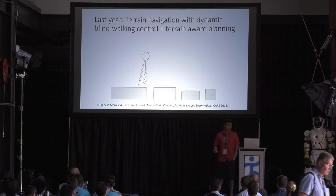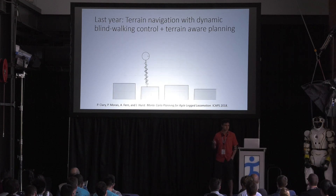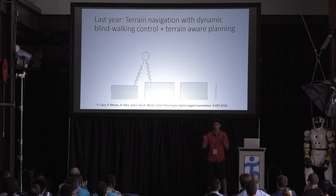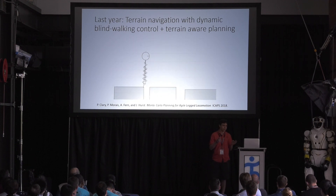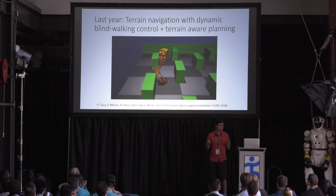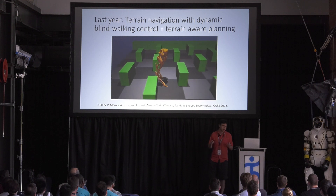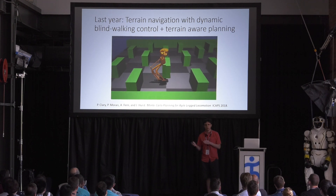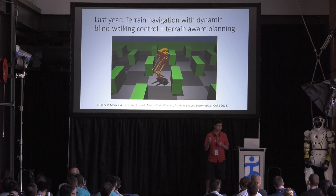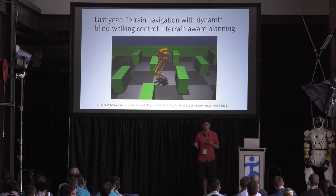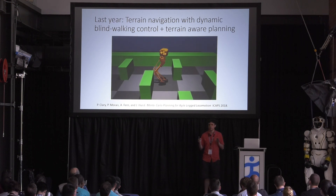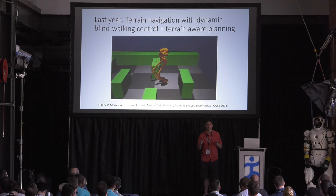Last year at Dynamic Walking, I presented an approach to controlling bipedal locomotion over complex terrain by taking a dynamically stable blind walking controller and combining it with a terrain-aware Monte Carlo planner. Since then, we've shown that this approach can be used to guide CASSIE in 3D while it's using a basic walking controller to move around. But in order to push this further and do more interesting movements on more complex terrain, we need a diverse library of controllers for CASSIE that produce stable dynamic movements but do not necessarily individually need to be terrain-aware.